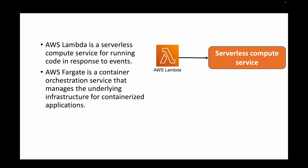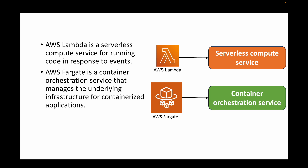AWS Fargate, on the other hand, is a container orchestration service. We can use Fargate to run containers and microservices. It manages the underlying infrastructure for containerized applications. So Lambda is serverless computing for running code in response to events, while Fargate is for running containerized applications.